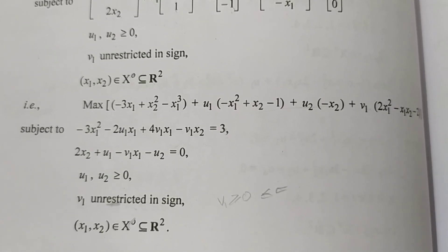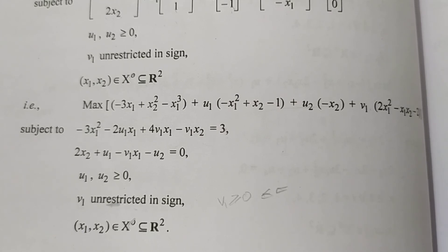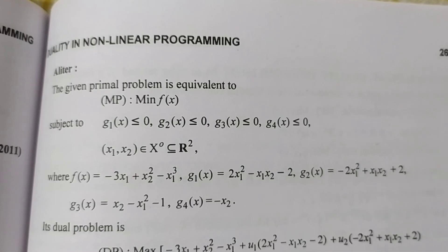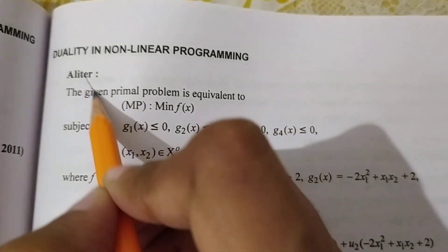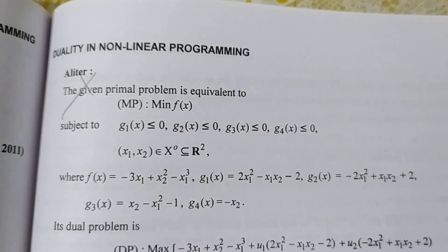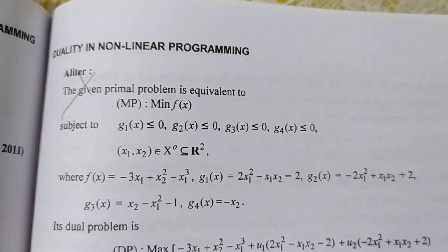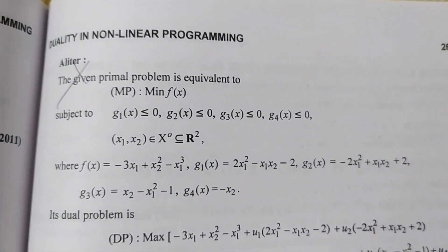यहाँ पर example complete होता है। यह बहुत important example है — short question या 8 marks में आ सकता है। Main rule याद रखना है। Second method हम नहीं करेंगे, उसको cross लगा देना है। Thank you.